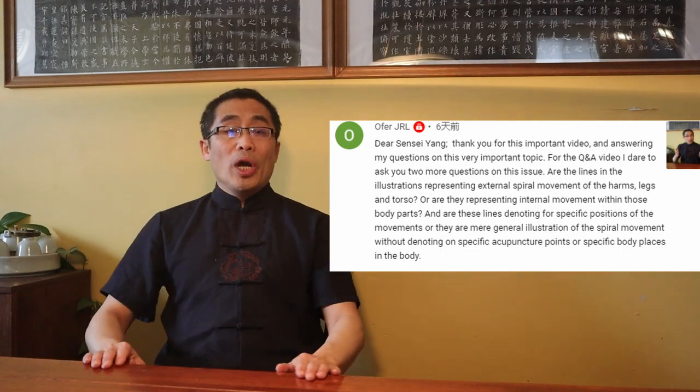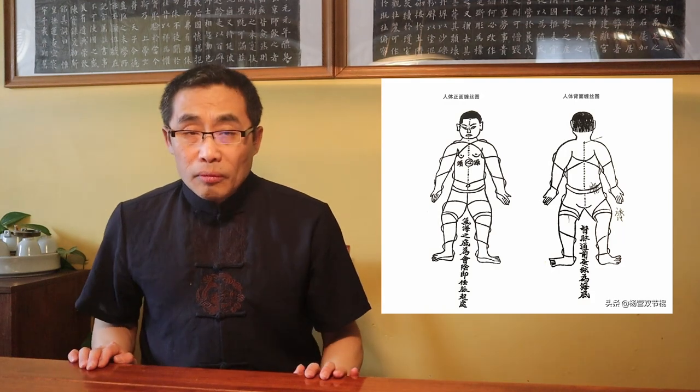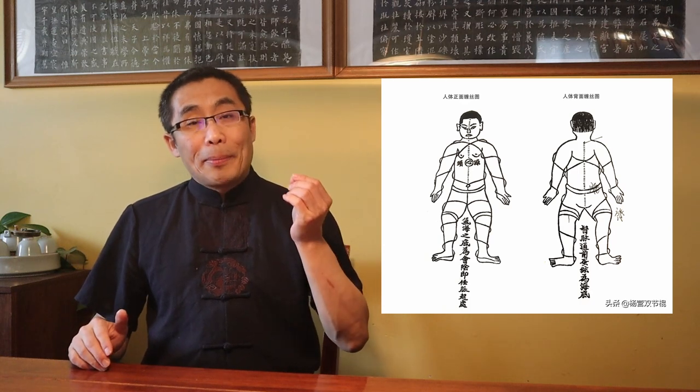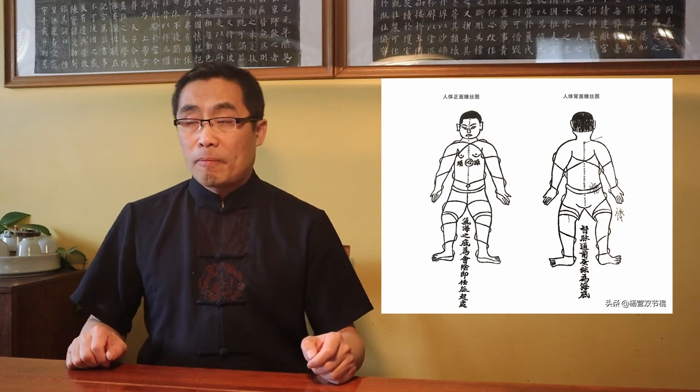Well, any energy originated inside the body and limbs must get applied outside the body and limbs. In other words, internal energy should be generated internally but applied externally. I have a video on the subject, Nei Gong Wai Yun, talking about the internal energy and emphasizing that it should be applied externally, or else it will be useless in combat situations. So, in Chen Xin's book, those lines are used to express the external expression or application, not the internal movement at all.